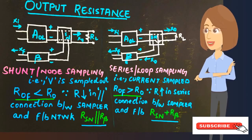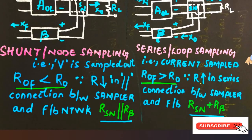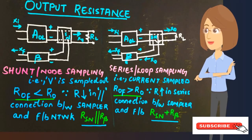The output resistance of a feedback amplifier depends upon the connection between the sampler and the feedback network. If the connection is shunt, the output resistance decreases because the sampler resistance and feedback network resistance are in parallel — parallel resistances are lower. If the connection is series, the output resistance increases because the resistances add up in series.